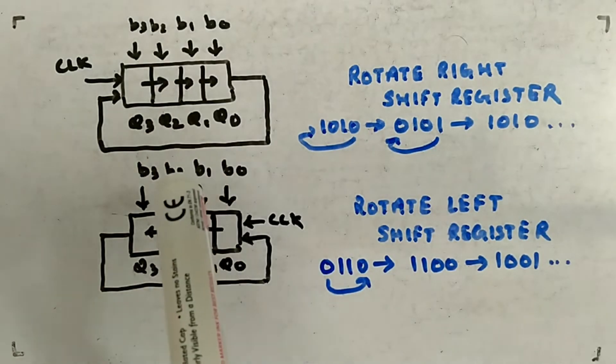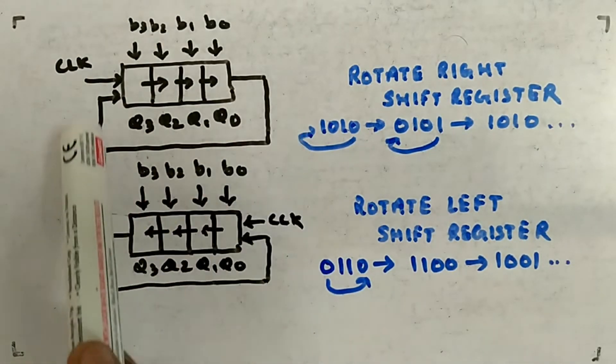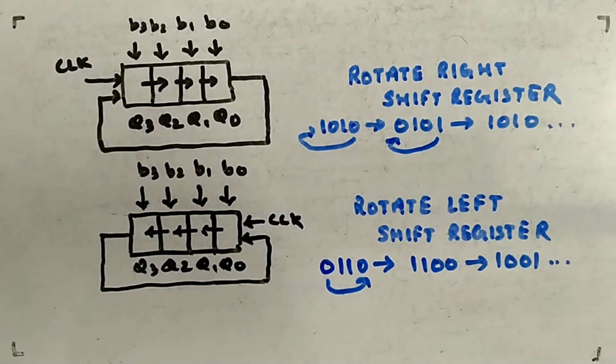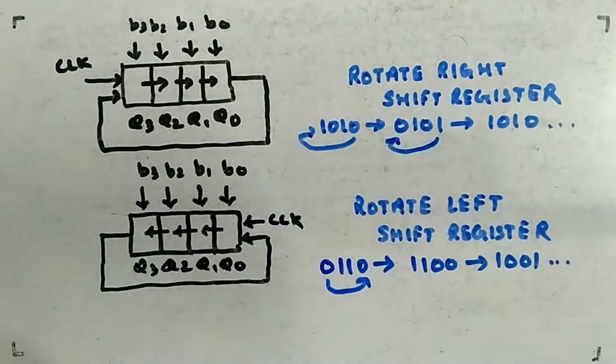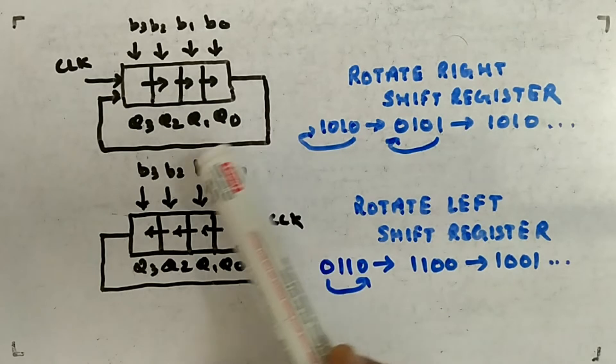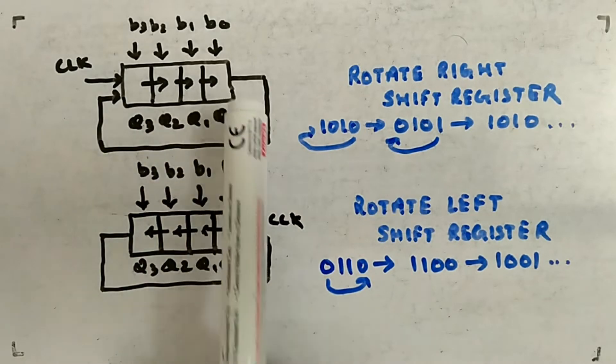b0 are loaded parallelly and the serial output is fed back to the input again. Loading has been done parallelly but shifting is done in this fashion - it's like a feedback type. From the output you are feeding it to the input. Here these values are q3, q2, q1, q0.